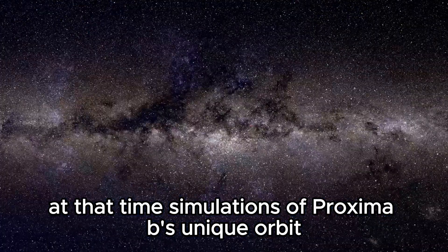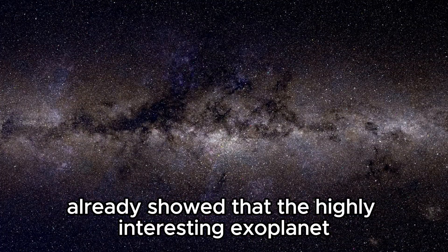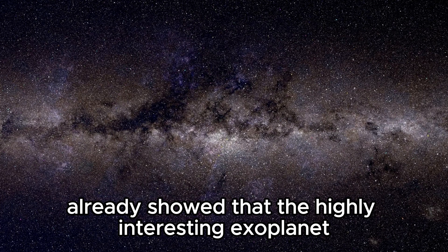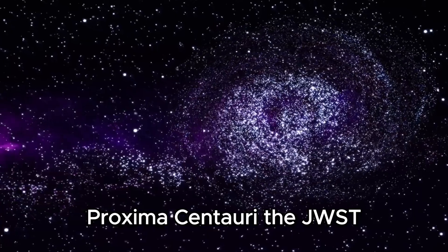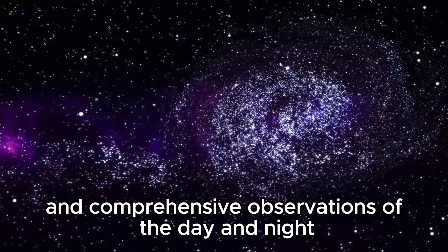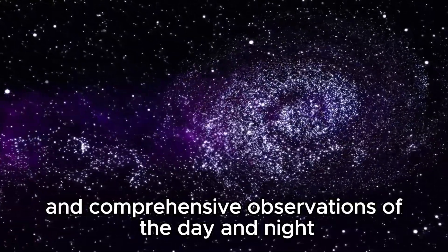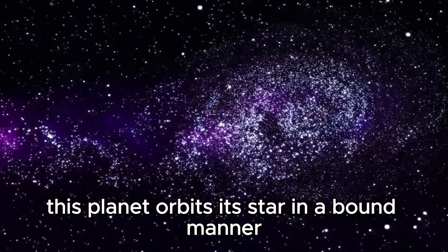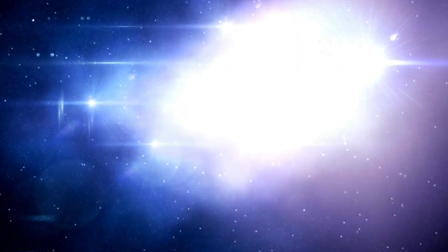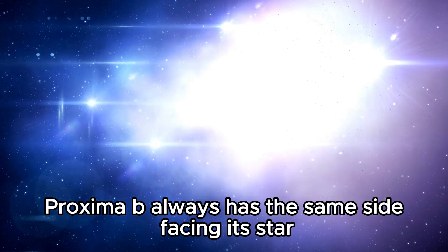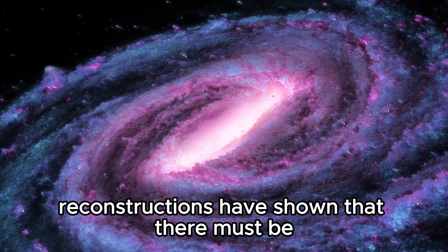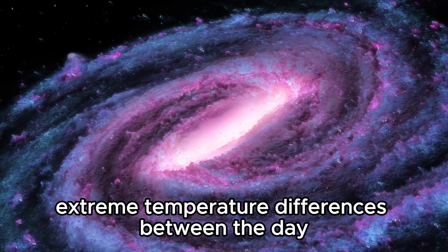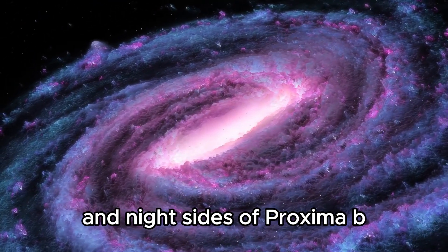At that time, simulations of Proxima B's unique orbit already showed that the highly interesting exoplanet lies within the habitable zone of its parent star, Proxima Centauri. The JWST will carry out regular and comprehensive observations of the day and night sides of Proxima B. This planet orbits its star in a bound manner, just as our moon orbits us. Proxima B always has the same side facing its star, and one side is always in shadow.